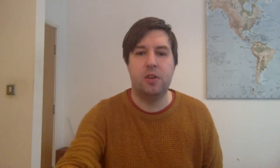So let's write down what we mean by the simple random walk. Here are two pictures of simple random walks I created earlier. The one on the left has p equals two thirds, which means q equals one third, which means it's going up slightly more than it's going down. You'll see that it goes up, down, down, up, down, up, up, up, up, up, down, up, etc.